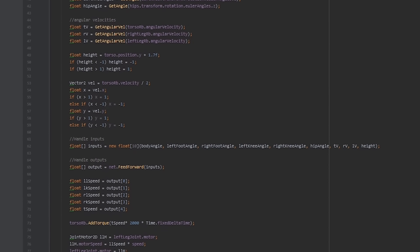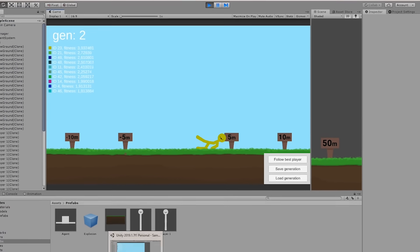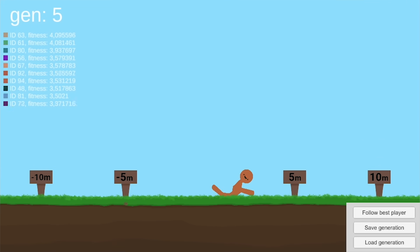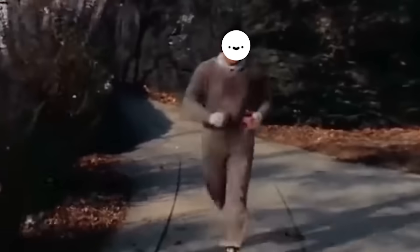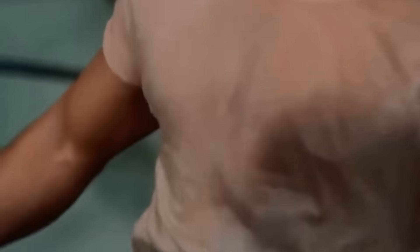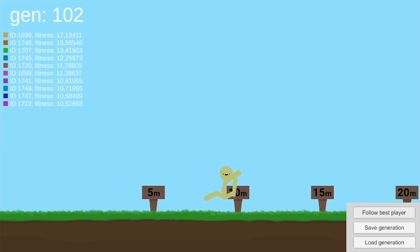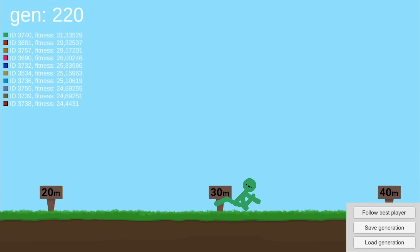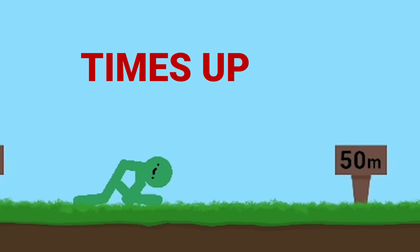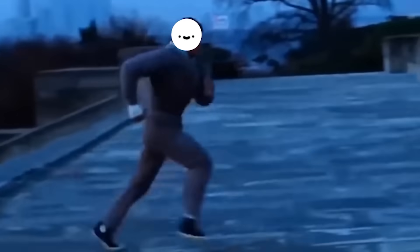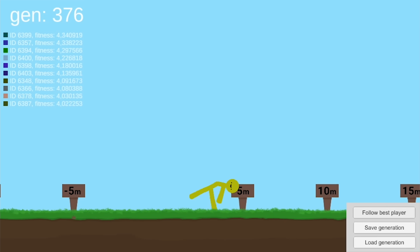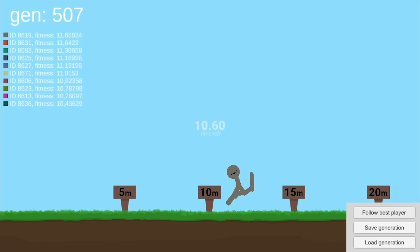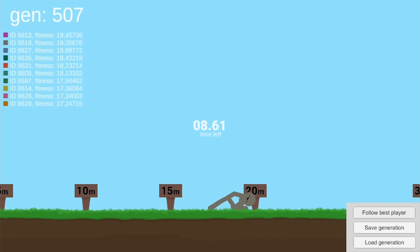After messing a bit with Billy's brain, he got back to training again, but this time, Billy is done playing games, he's going for that 15 meter mark. And after blood, sweat, tears, and 500 generations of training, it was time for Billy to prove himself.